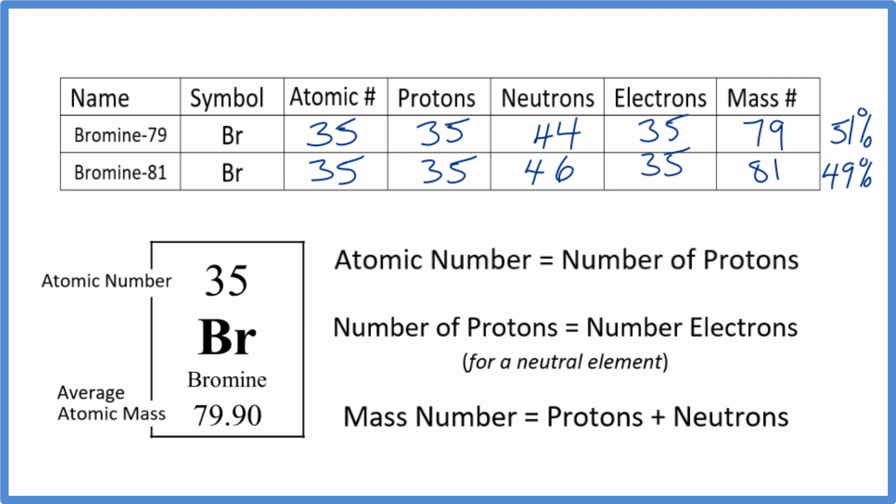We average these together to get the average atomic mass based on their abundance. Since they're about equal in abundance, it should be right between 79 and 81. It's 79.90, which is close to the midpoint. The average atomic mass is an average of the masses of each isotope, weighted by their abundance.